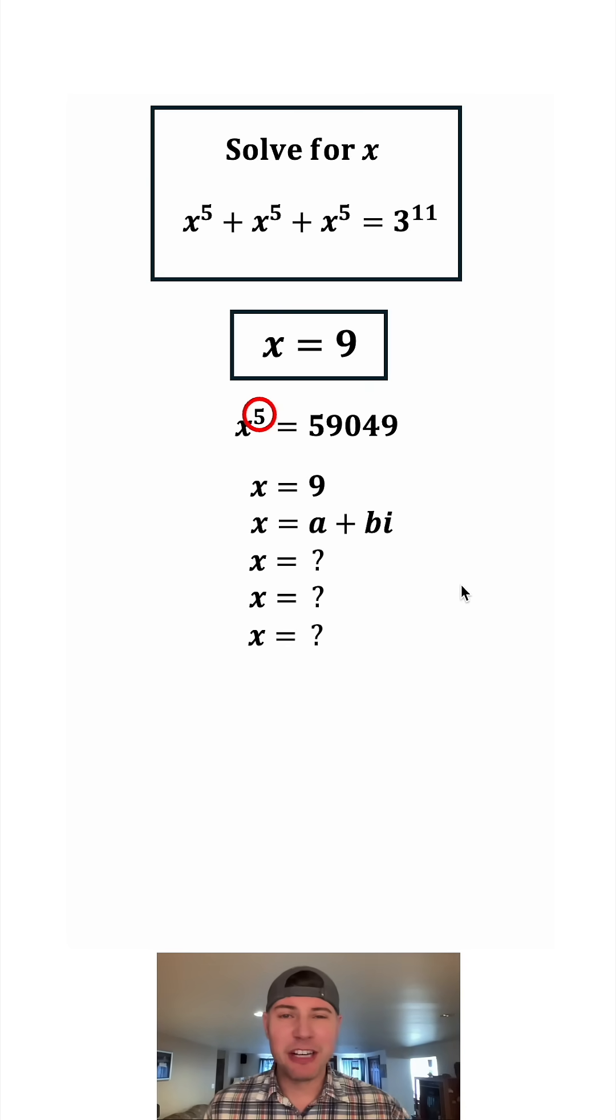These other ones are going to be complex solutions. They're going to be in the form a plus bi where i is the imaginary number. And all four of these will be in that format. They'll all be some real portion plus some imaginary portion.